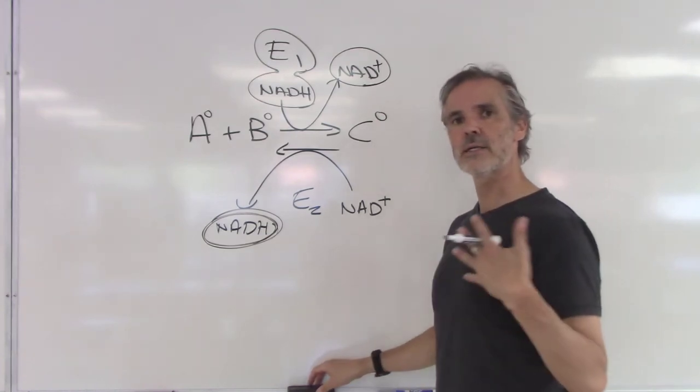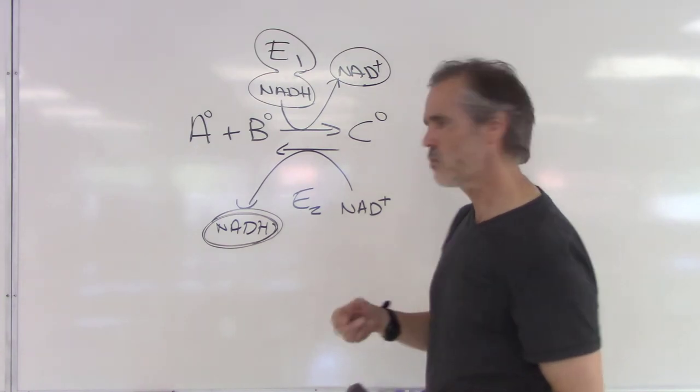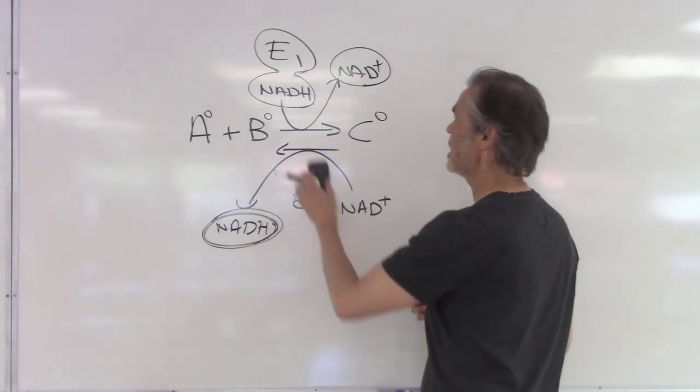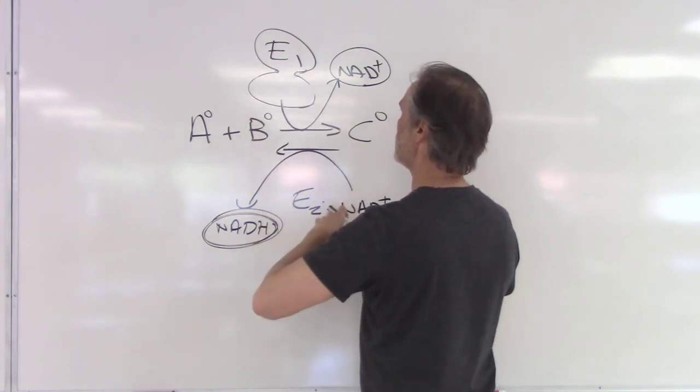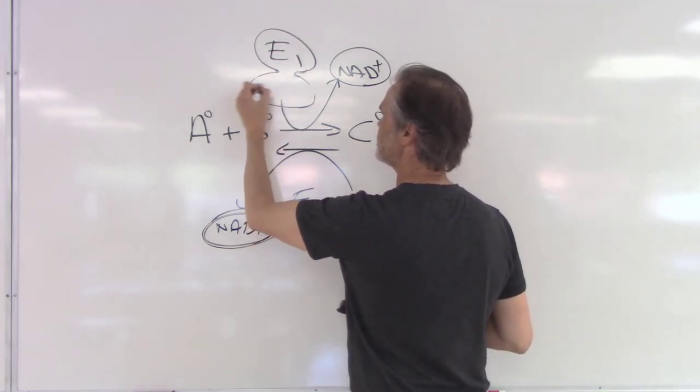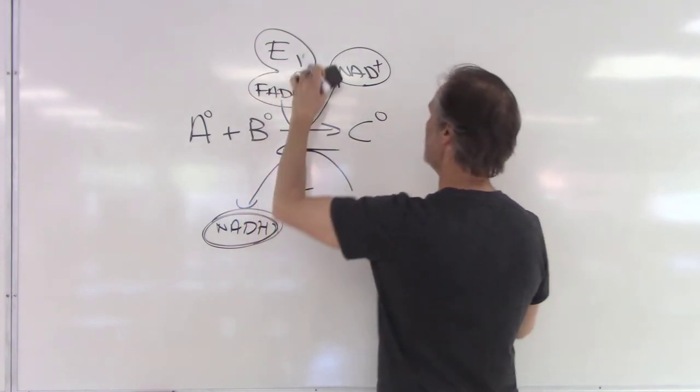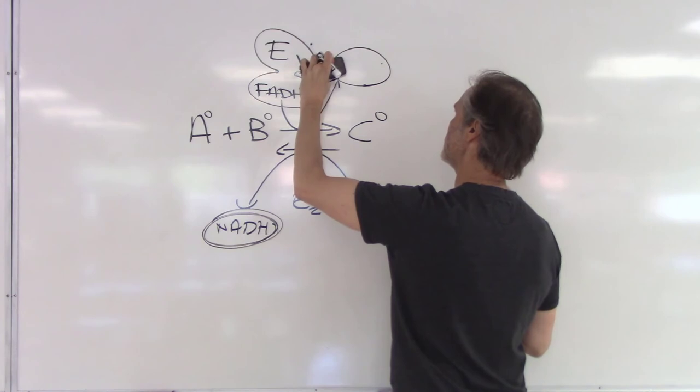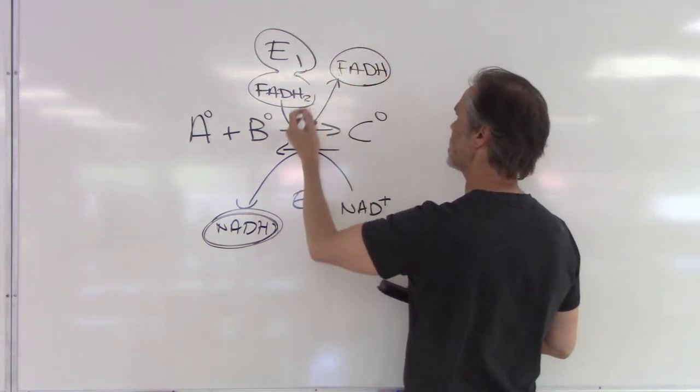I told you that in citric acid cycle there's another electron carrier that we can use, and I will show this to you right now. So it could be another one. There's one that's called FADH2 and it would be converted into FAD.